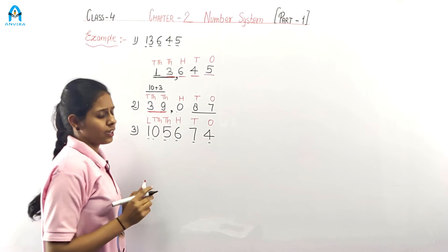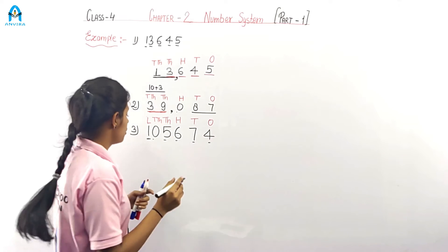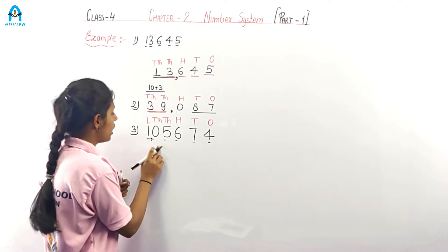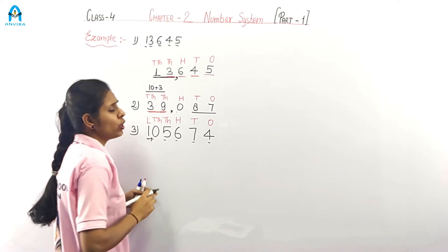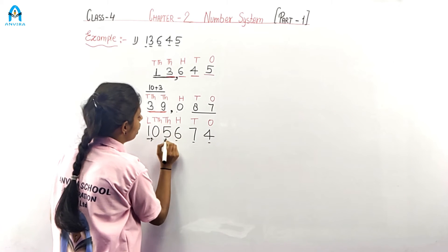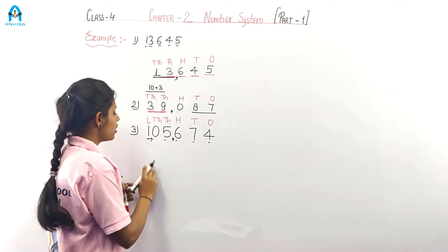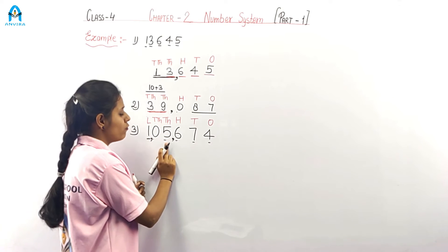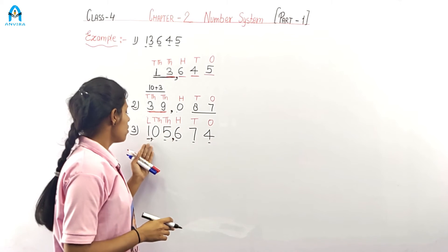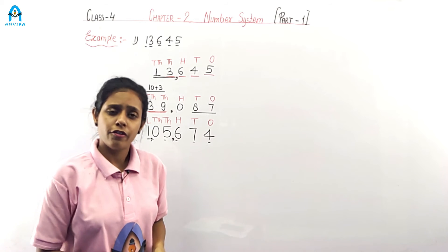This is lakh. So starting here: this is one lakh. When the period changes, we use a comma. One lakh, then zero on the ten thousands place — zero is not read. Then five thousands — comma after thousands. So: one lakh, five thousand, six hundred seventy-four.